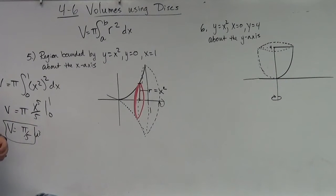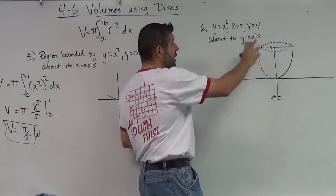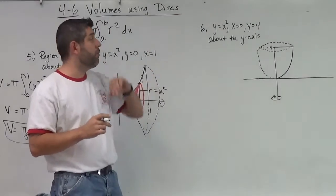Let's take a look at an example where we revolve it around the y-axis. So let's say I have the same thing, x-squared, and I revolve it around the y-axis, but we go from zero to four.